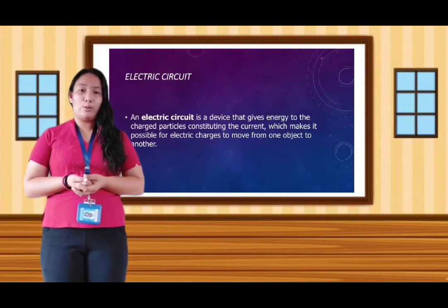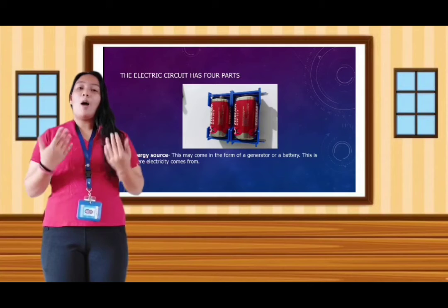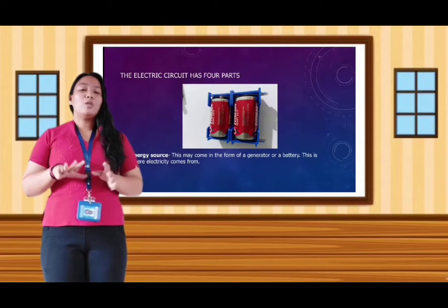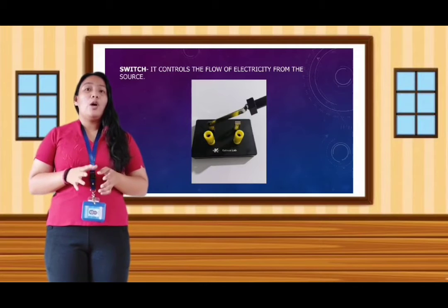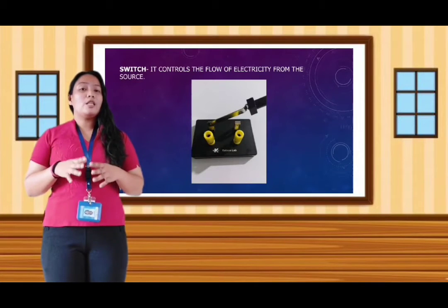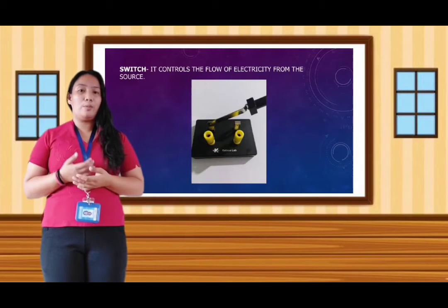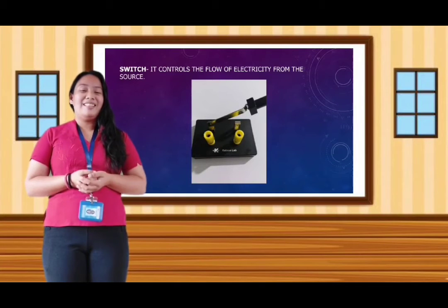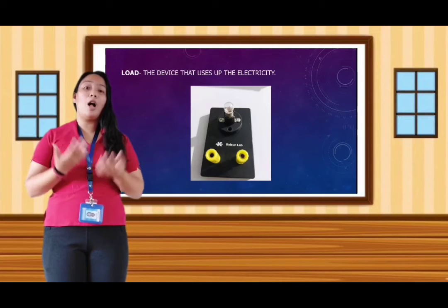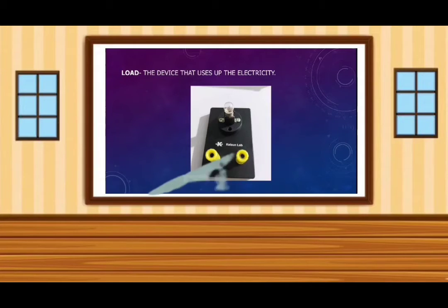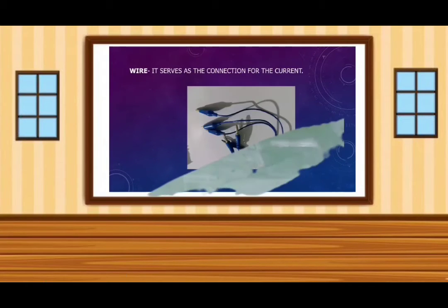Let us know each part. The energy source may come in the form of a battery or a generator — in this case, you can see a battery. The switch controls the flow of electricity from the source, just like the switch for the light bulb in our house. The load, just like the bulb, uses up the electricity — it is the one that uses the electricity from the battery. And the wire serves as the connection for the current to move, or for the bulb to light up.